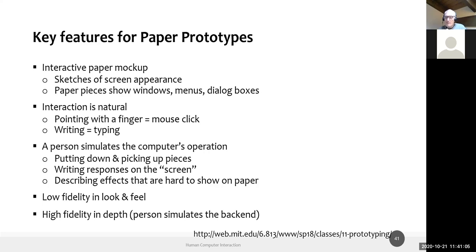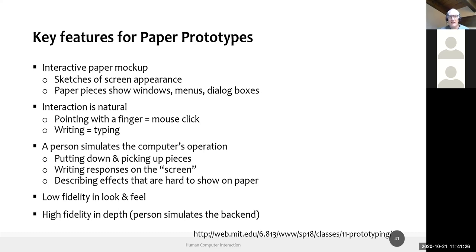The user and the simulator should be separate persons. Some effects are not easy to show on paper — sound feedback, vibrations — but the simulator can approximate those. If something is supposed to vibrate, the person could shake the paper or the table to convey that sense of feedback. For animation, you can just tell the user that something will appear slowly, helping them imagine the real appearance of the interface.